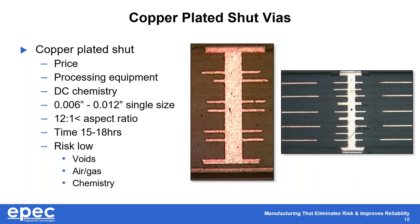Copper-plated shut vias are a unique process that not many manufacturing services offer, and there's a lot of added cost. It requires special equipment and special DC chemistries. It can only be done on certain hole sizes — from 6 mils to 12 mils — and must have a 12-to-1 aspect ratio, so consult engineering with the board thickness. It can take up to 18 hours to complete the plating process, but there is very low risk of voids, air, gas, or chemistry being trapped. We do this only domestically in our Texas facility.